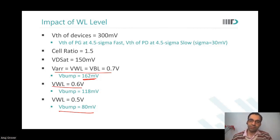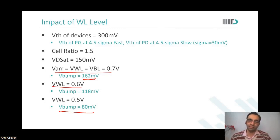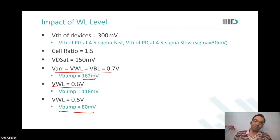During reading we look at two things: cell current and stability. A read assist scheme targeting stability may hurt cell current, so you may use two assist schemes in parallel — one recovers stability, the other recovers cell current. An assist scheme is anything that electrically modifies circuit behavior to avoid increasing area. One of my papers actually uses multiple read assist schemes in parallel to achieve exactly this.